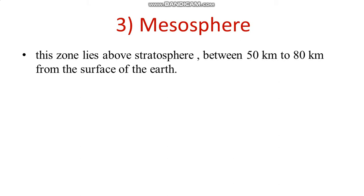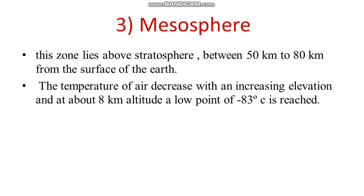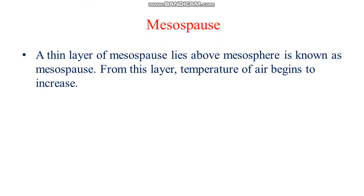The mesosphere is the third layer, lying above the stratosphere between 50 km to 80 km from the surface of the earth. The temperature of air decreases with increasing elevation, reaching approximately minus 83 degrees Celsius at about 80 km altitude. Above the mesosphere lies the mesopause, a thin layer from which temperature begins to increase again.